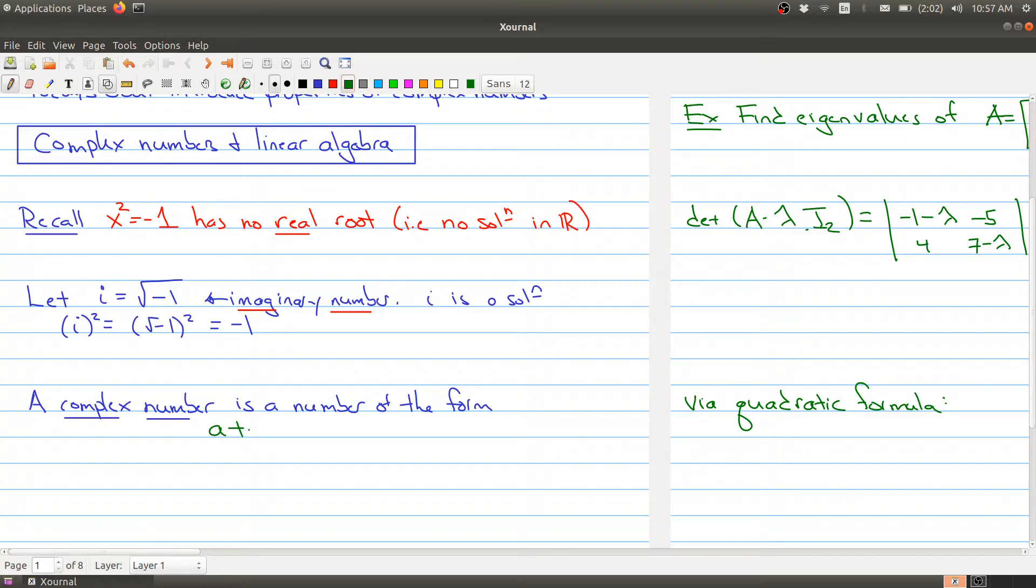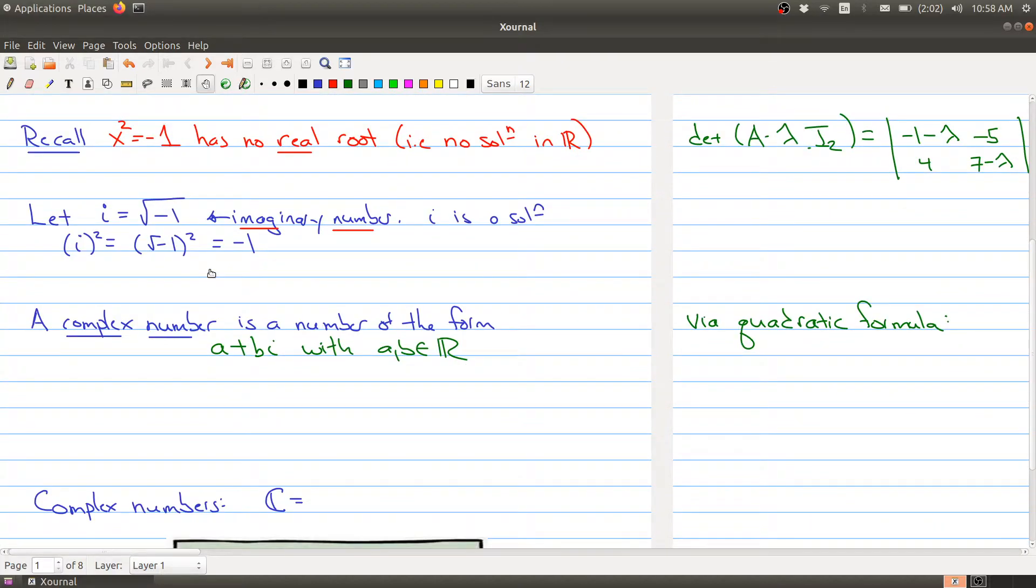Examples of complex numbers would be 3 plus 2i, or 3 minus 2i, or 4i. You can also think of regular numbers as complex numbers because 17 is the same thing as 17 plus 0i.